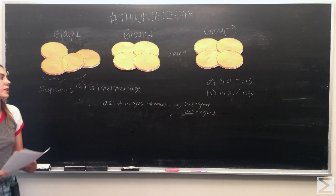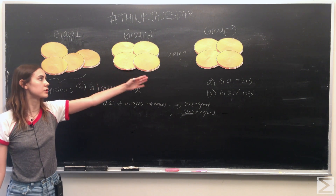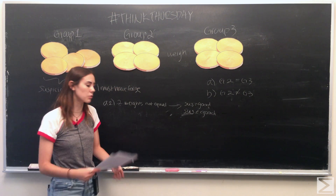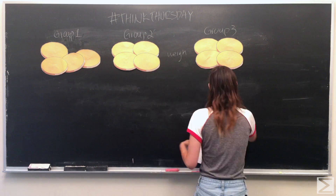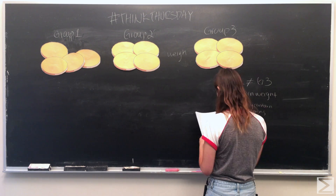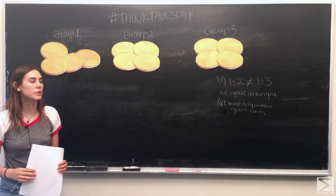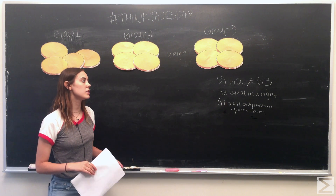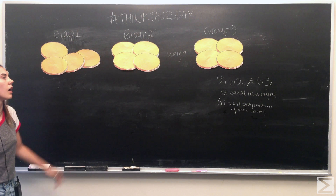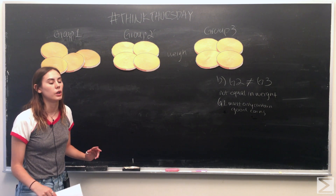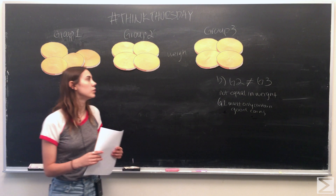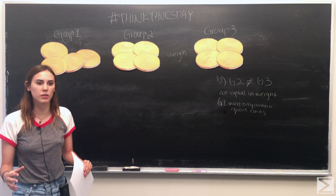Those are all the scenarios for when group two equals group three on the first weighing. Now we move on to case B — where group two and group three are not equal. In this case, we know that group one must contain only good coins. Because we don't know if the false coin is lighter or heavier than a good coin, we know one of these groups has to be lighter than the other and one has to be heavier. So we label which one is heavier and which one is lighter.